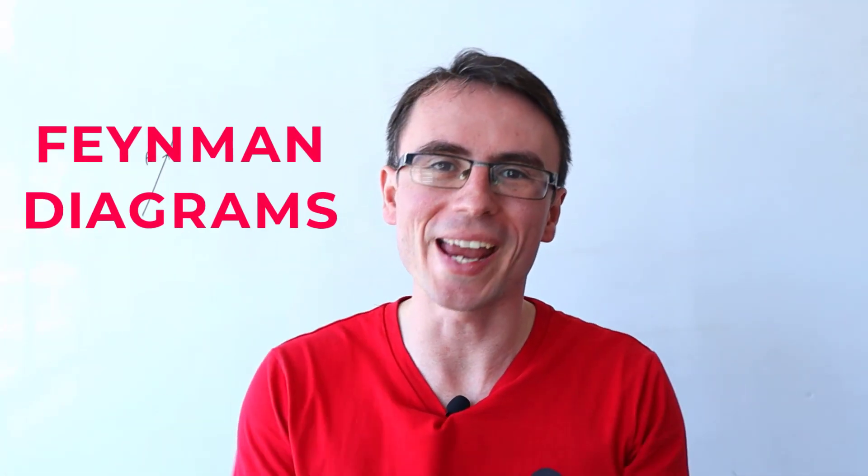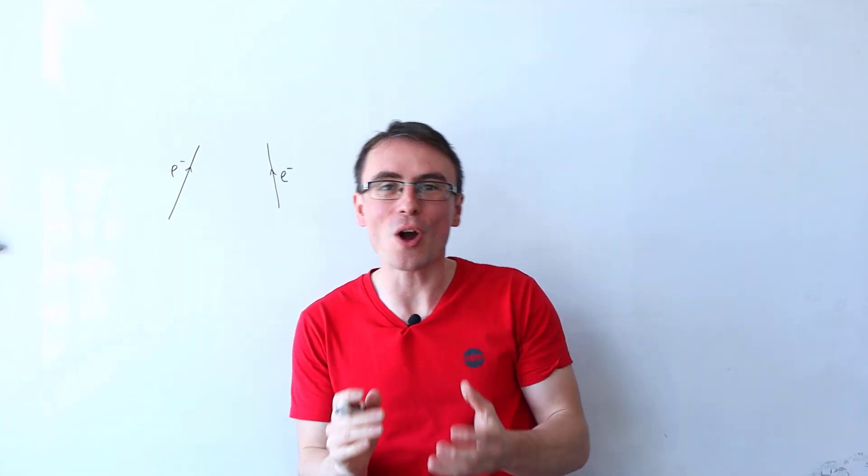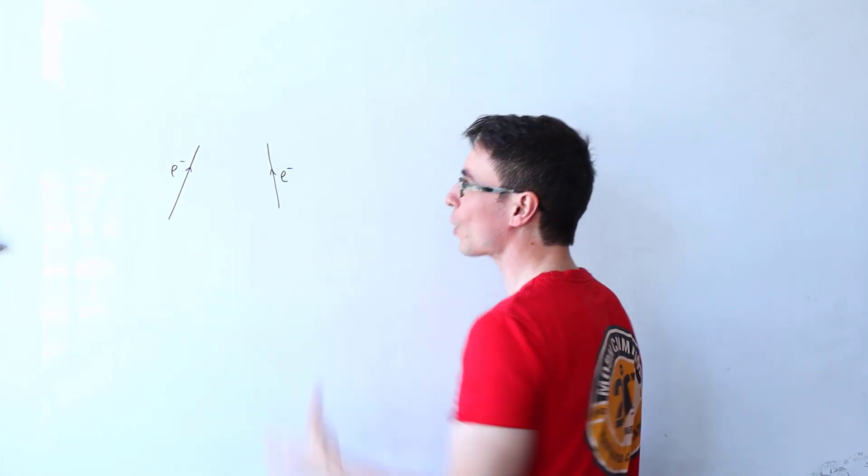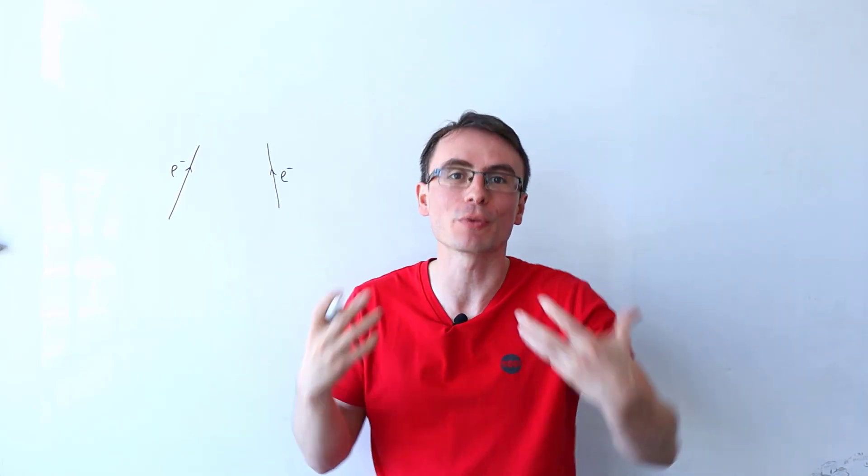Let's revise Feynman diagrams for AQA physics. We're going to start off with two electrons. What are they going to do? Because they have the same charge, they're going to be repelling.